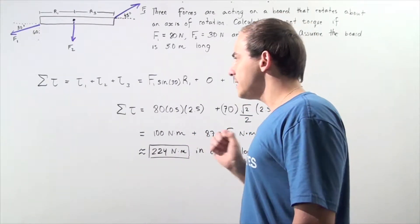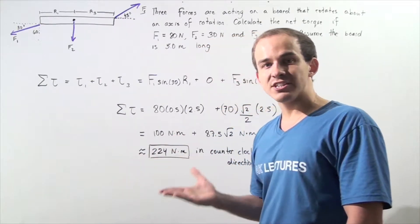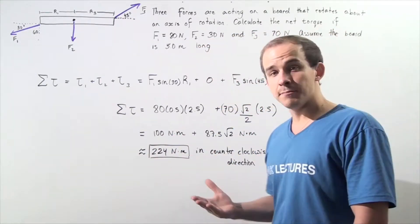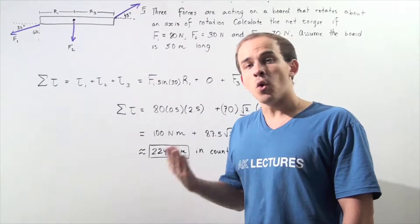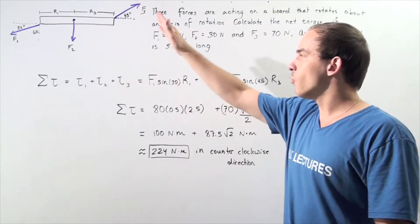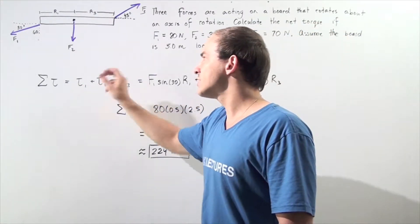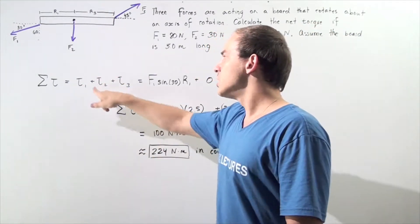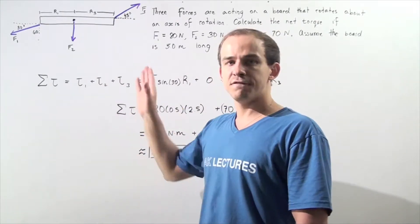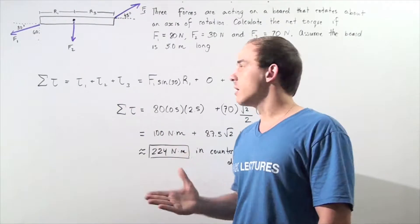In the beginning, our first step is to find the formula for the net torque. The net torque is simply the sum of all the torques created by all the forces. We have three forces, and that means we have three torques. Torque 1 is the torque created by force 1, torque 2 is the torque created by force 2, and torque 3 is the torque created by force number 3.